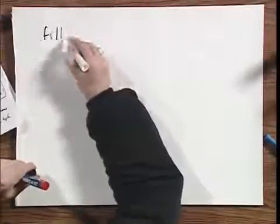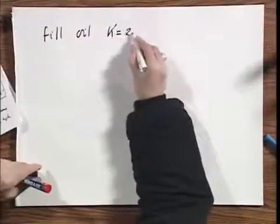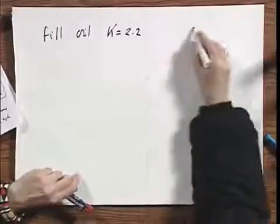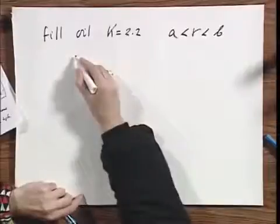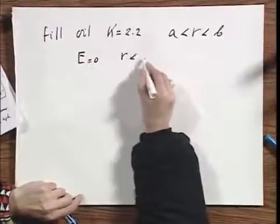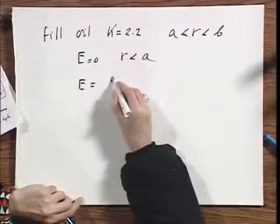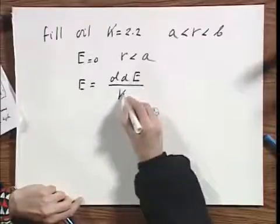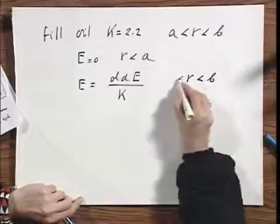Okay. Now we fill the capacitor with oil. And the dielectric constant is 2.2. And we do that in the area where there was vacuum before. Now E remains zero for R less than A. That's not going to change. The new E is going to be the old E, which we calculated, divided by K. Remember, E goes down. That is for R between B and A.